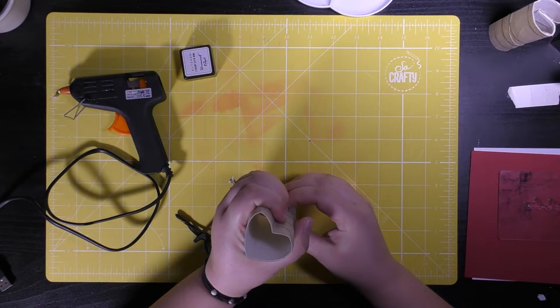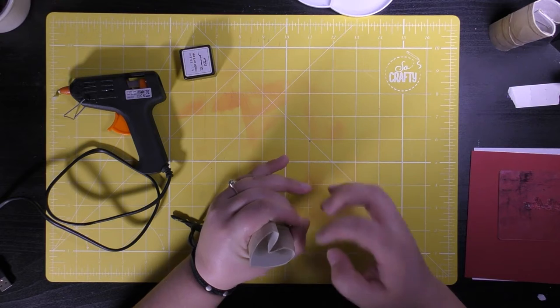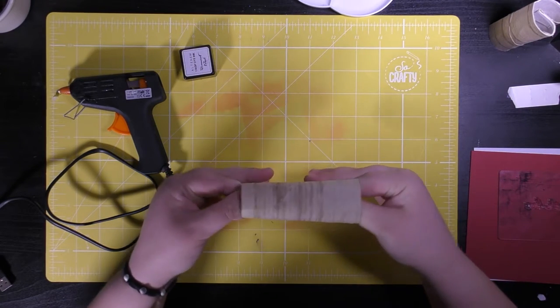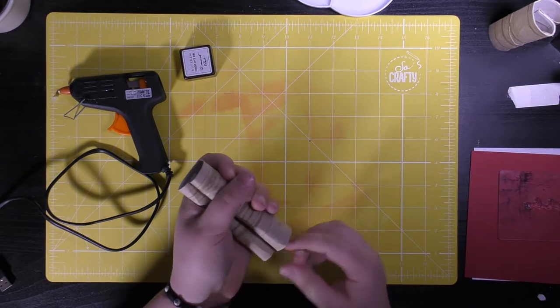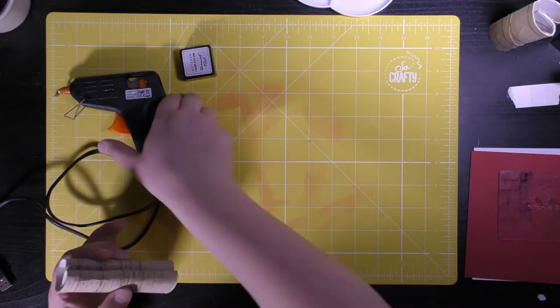Don't worry if it's not perfect because you want it to look unique and you can always manipulate the cardboard as you work. Once you're happy with the shape that you have for your stamp, you can start to glue the roll together.